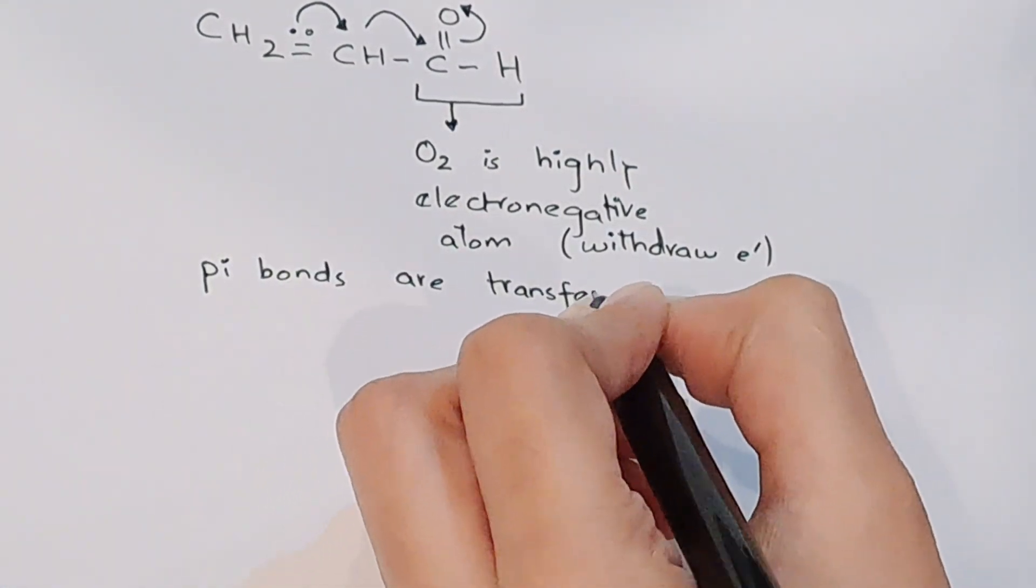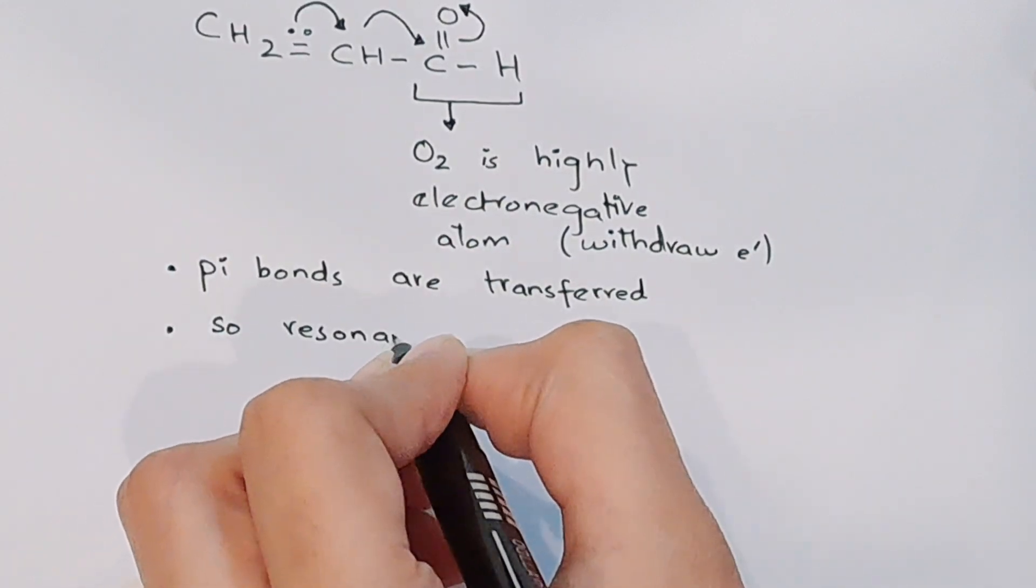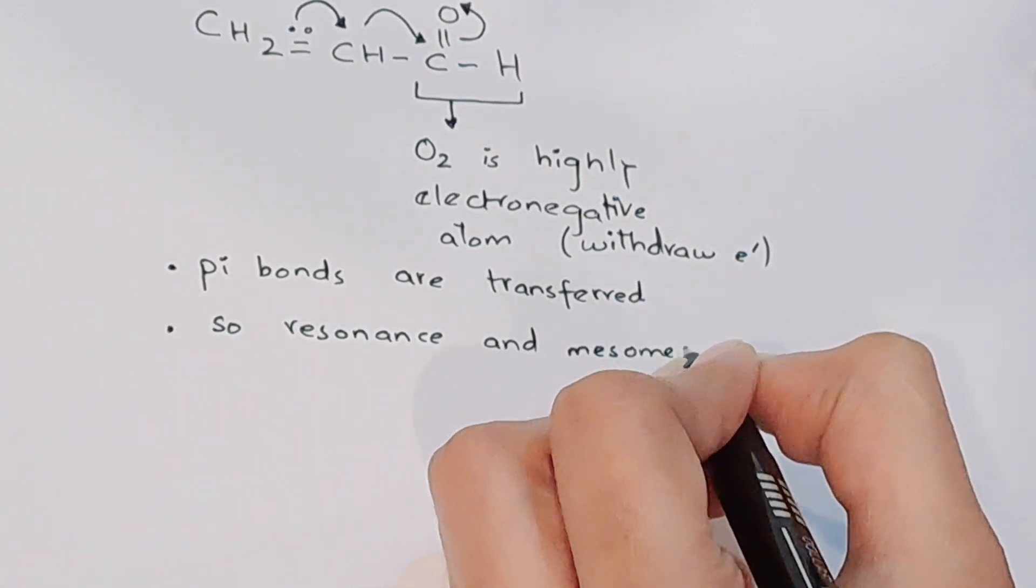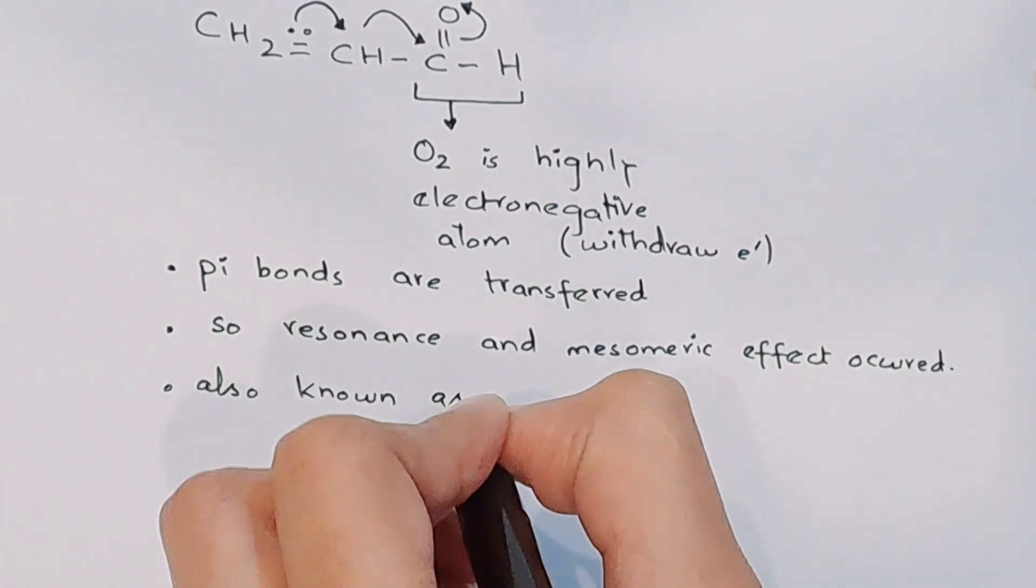As you can see in the video, the pi electrons are shifted and electrons are withdrawing. Resonance and mesomeric effect both occurred and it is also known as negative M effect.